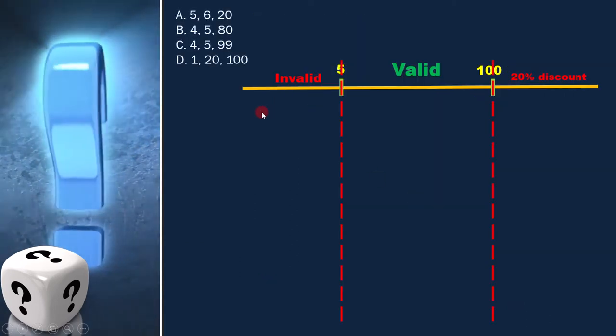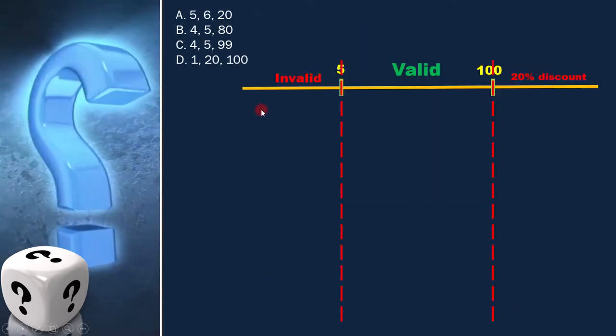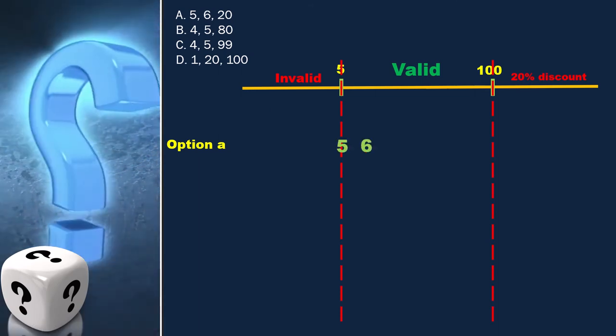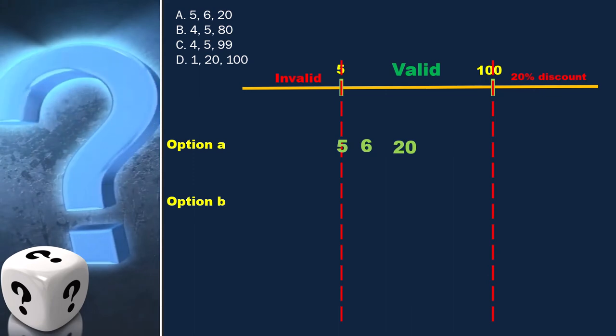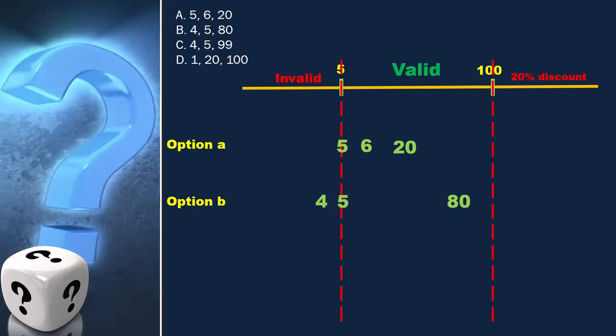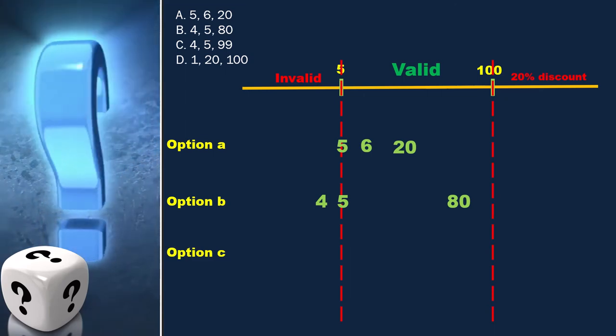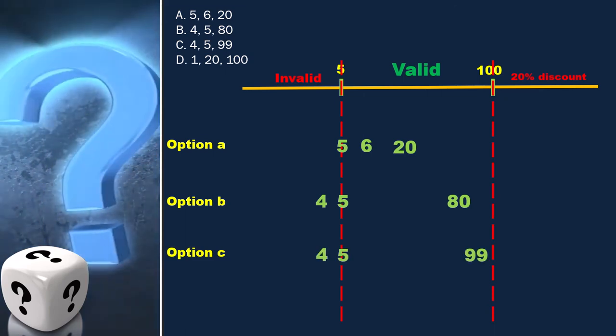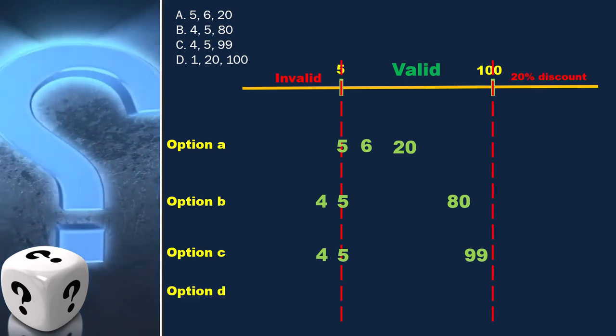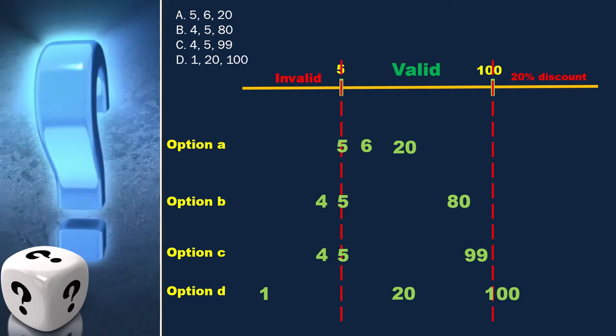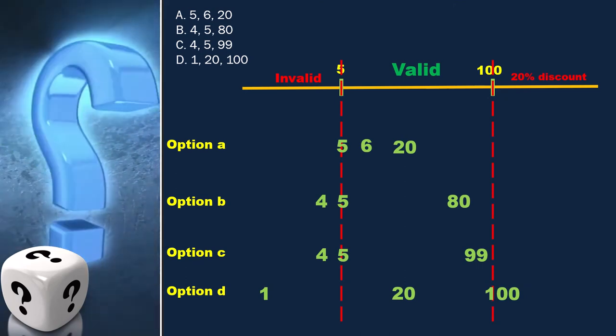Now let's analyze each option one by one. Option A is 5, 6, 20. Option B is 4, 5, 80. Option C is 4, 5, 99. Option D is 1, 20, 100.